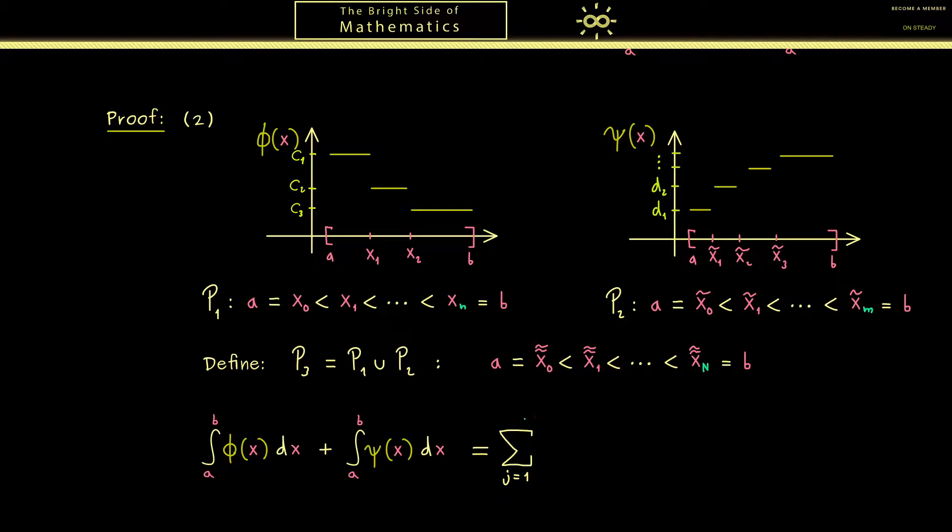Therefore if we want to calculate the first integral we have the sum j is equal to 1 until we reach capital N. Then inside the sum we have the value cj times the difference of the points. Here maybe the enumeration of the values cj has changed because we added more points. However the possible numbers that could come out don't change at all. Therefore for the new partition p3 we call them cj again. Now in a similar way we get the same result for the integral of psi. The sum looks similarly but now we use the values dj again.